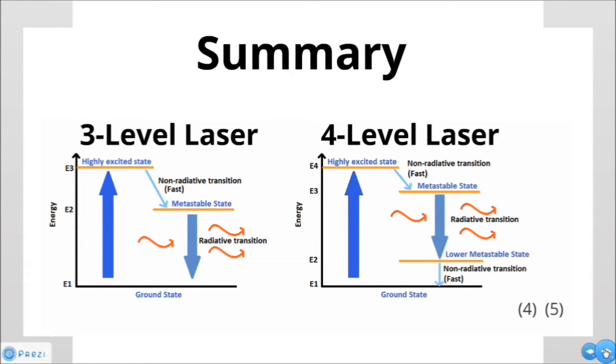In conclusion, three-level and four-level lasers both work by the same scientific principles, that the transition of atoms from a higher energy level to a lower one, when stimulated, can produce optical photons, which can then be amplified to produce a laser beam.